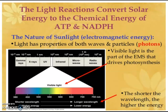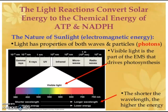From the physical chemistry aspect of photosynthesis, the light reactions convert solar energy to the chemical energy of ATP and NADPH. The nature of sunlight, that is electromagnetic radiation, is such that light has both wave nature and particle nature — they have photons, which are energy packets. Visible light is the part of the electromagnetic spectrum that drives photosynthesis. The shorter the wavelength, the higher the energy, since energy is inversely proportional to the wavelength.